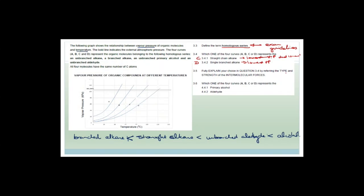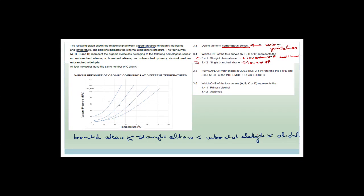To fully explain the choice: the branched and straight alkanes both have very weak London forces, much weaker than the aldehyde and alcohols. The alcohol has a hydroxyl group with hydrogen bonding, and the aldehyde has a double-bonded O with some hydrogen bonding, but the alcohol has stronger hydrogen bonding overall. The branched chain is even weaker than the straight chain because it has less surface area and a shorter main chain. So the primary alcohol would be A and the aldehyde would be B.